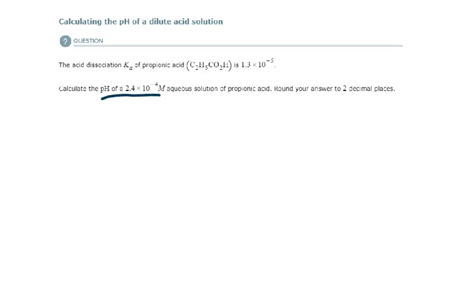Round our answer to two decimal places. To begin, we have to first start with the balanced reaction equation for the dissociation of this weak acid. The weak acid is propionic acid, C₂H₅CO₂H.